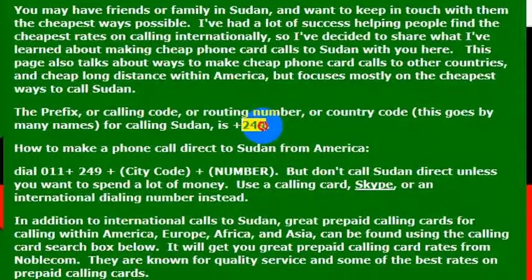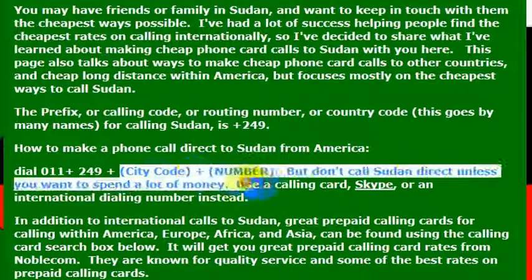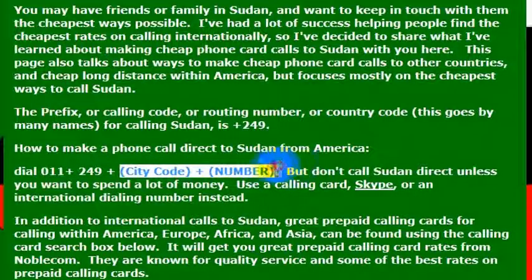The country code for Sudan is 249, so if you're calling internationally, you would dial 011, which is the international dialing code, then you would dial 249, which is the country code, and then you would dial the phone number that you are trying to reach.